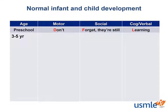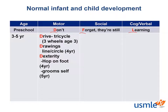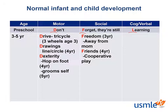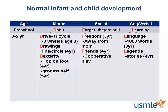Finally, we have the preschool-aged kids. We'll use the mnemonic Don't Forget They're Still Learning for this one. Preschool motor milestones include riding a tricycle at 3 years, drawing a line, circle, or stick figure by age 4, and their dexterity increases, allowing them to hop on one foot by age 4, and being able to use buttons, zippers, and dress themselves by age 5. Socially, these kids are able to spend time away from mom for part of the day by 3 years, and participate in cooperative play — playing the same game with other kids — by age 4. Verbally, they are able to understand 1,000 words by age 3, and use complete sentences and tell detailed stories by age 4.